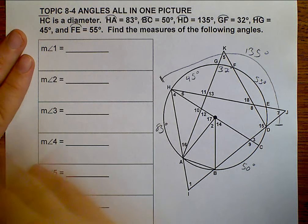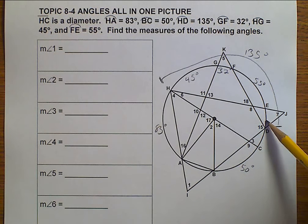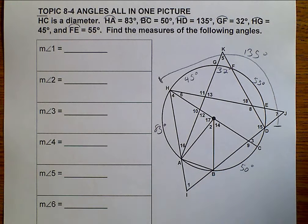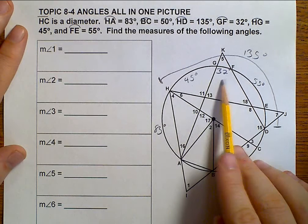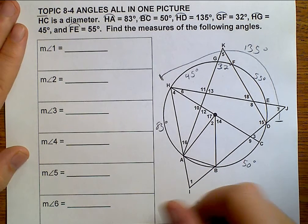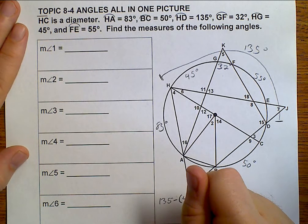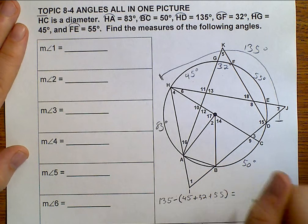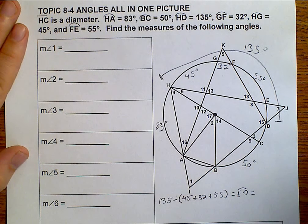We're given lots about the circle, but we're going to need to find the rest of our circle. I don't know ED, DC, or AB, and I want to know every piece of this circle. To find ED, that's very easily done — it's 135 minus 45 plus 32 plus 55, which gives us arc ED equal to 3.